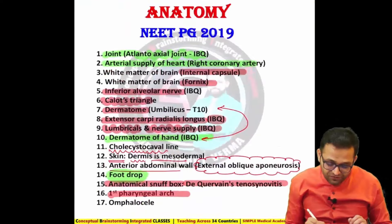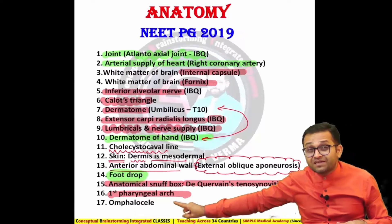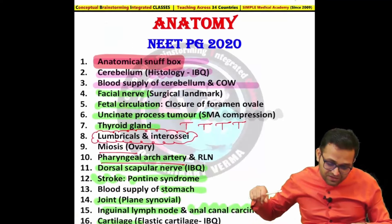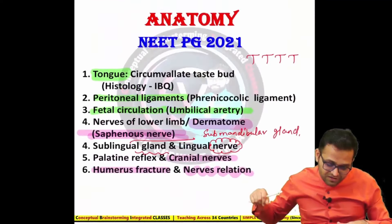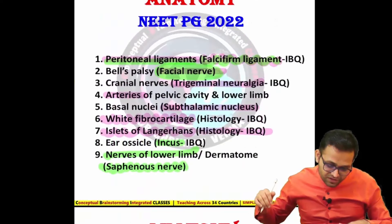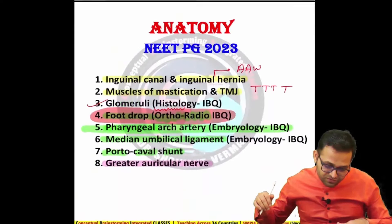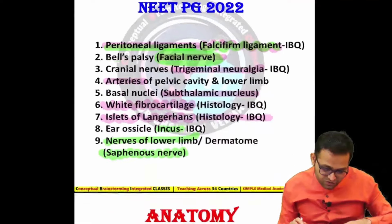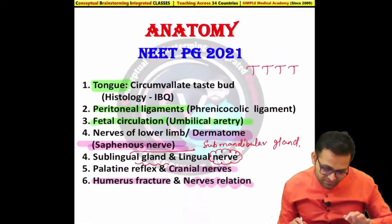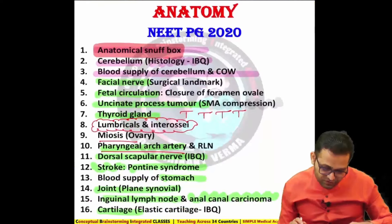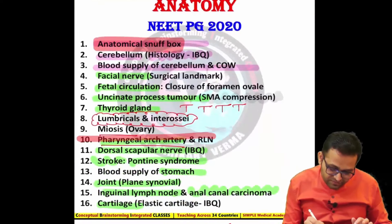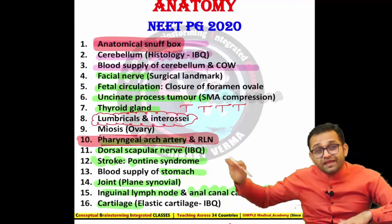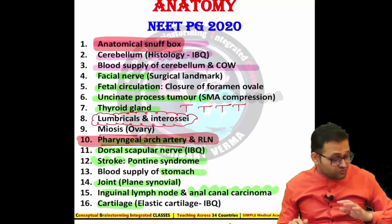The first pharyngeal arch and the pharyngeal apparatus was asked in 2019 and again in 2023 in another place. The pharyngeal arch arteries and the recurrent laryngeal nerve are covered here. They ask about pharyngeal arch topics every alternate year.